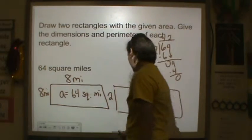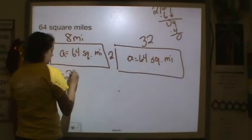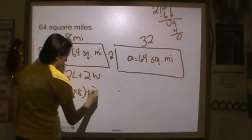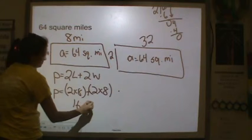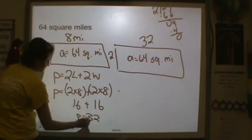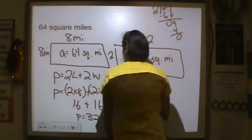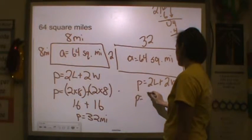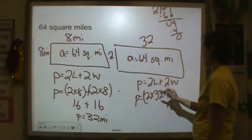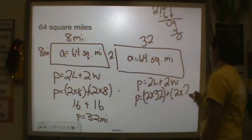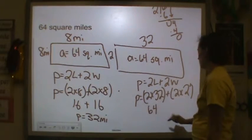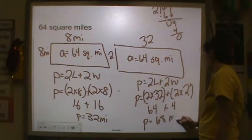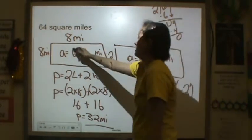And again, we need to find the perimeter. Perimeter is equal to 2L plus 2W. Perimeter is equal to 2 times 8 plus 2 times 8. 2 times 8 is 16 plus 16. That's equal to 32. So the perimeter is 32 miles. Perimeter is equal to 2L plus 2W. So my L is 32. So perimeter is equal to 2 times 32 for the length plus 2 times 2 for the width. 2 times 32 is 64 plus 4. So the perimeter is equal to 68 miles. Again, different perimeter, same area.